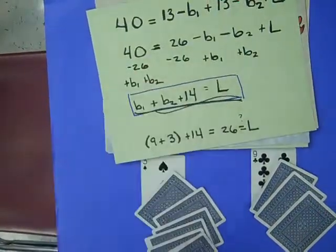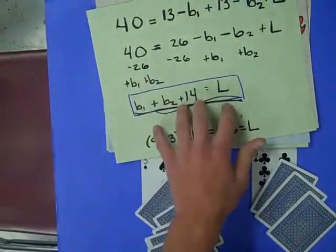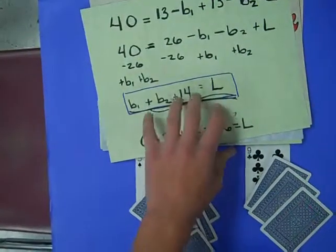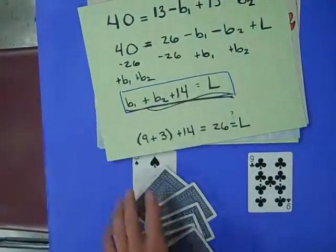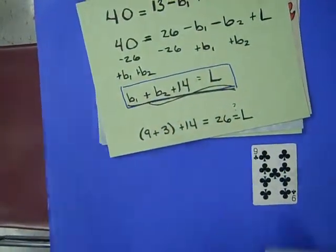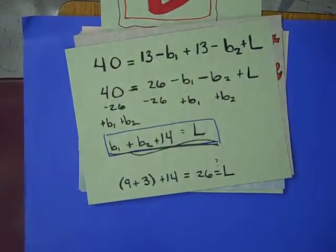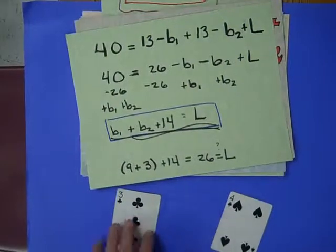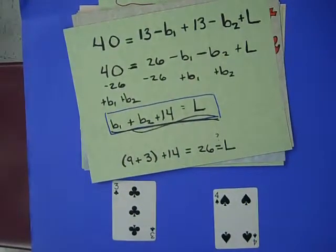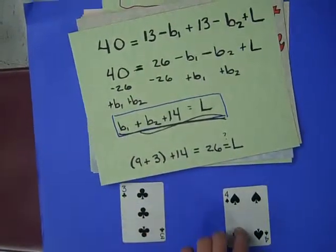To find our leftovers, this equation will work no matter what base we have. So we're going to use two different bases this time. Instead of 9 and 3, we can use 3 and 4. So 3 plus 4.